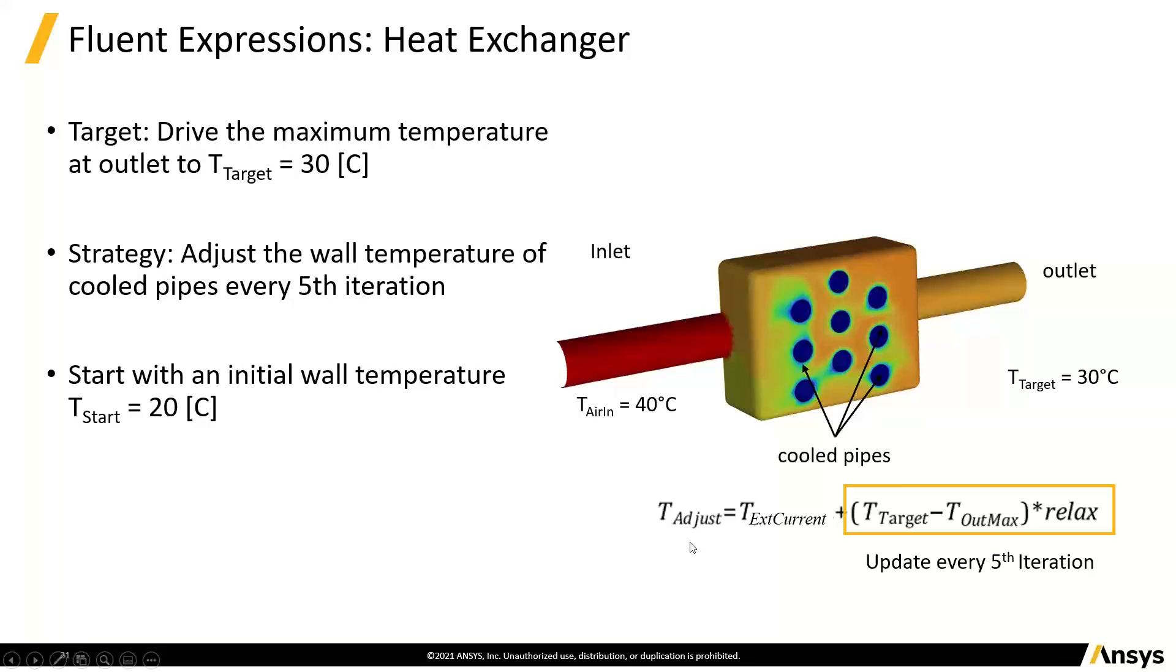So what we can do here is we can adjust the wall temperature. We can start with a guess and then we can adjust it based on our target difference and a relaxation factor. And so hopefully as these two get closer together, we will be adding a smaller and smaller change to this and it will converge. And we'll do it every fifth iteration.